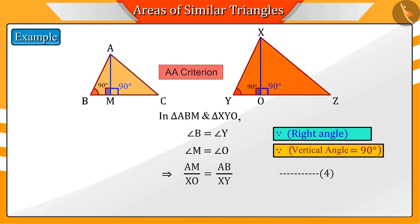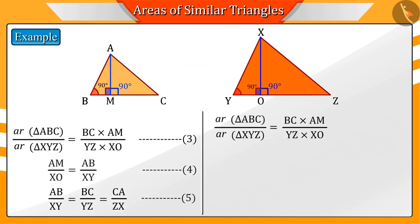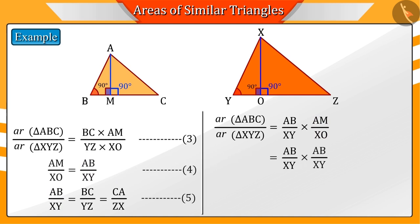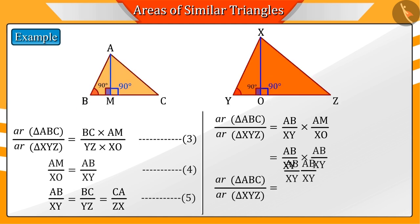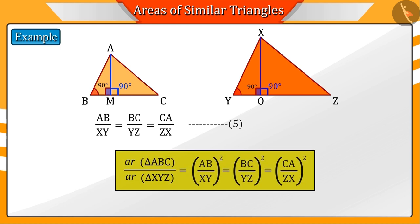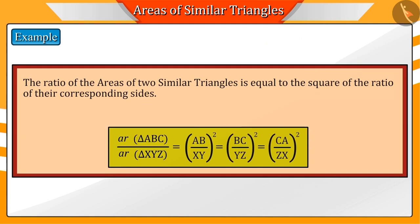We are given that triangle ABC and triangle XYZ are similar triangles; therefore, the ratio of the corresponding sides will be the same. In equation 3, substituting BC over YZ from equation 5 as AB over XY, and in equation 4 substituting AM over XO as AB over XY, we get the ratio between the areas of triangle ABC and triangle XYZ as the square of AB over XY. That is, from the above solution, we can say that the ratio of the areas of two similar triangles is equal to the square of the ratio of their corresponding sides.